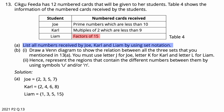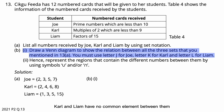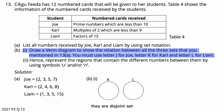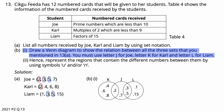Question 13: Draw a Venn diagram to show the relation between all 3 sets. Carl and Liam have no common element between them — they are disjoint sets. Set Joey intersects with both Carl and Liam. The common element for Carl and Joey is 2. The common elements for Joey and Liam are 3 and 5. Joey is left with 7, Carl is left with 4, 6, and 8, and Liam is left with 1 and 15.